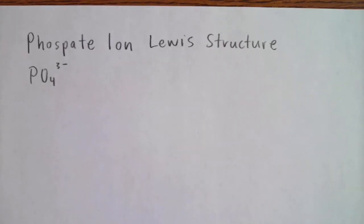Hello chemistry students. I wanted to record a quick tutorial on how to draw the phosphate ion Lewis structure. The phosphate ion has a formula of PO4 with a three minus charge.